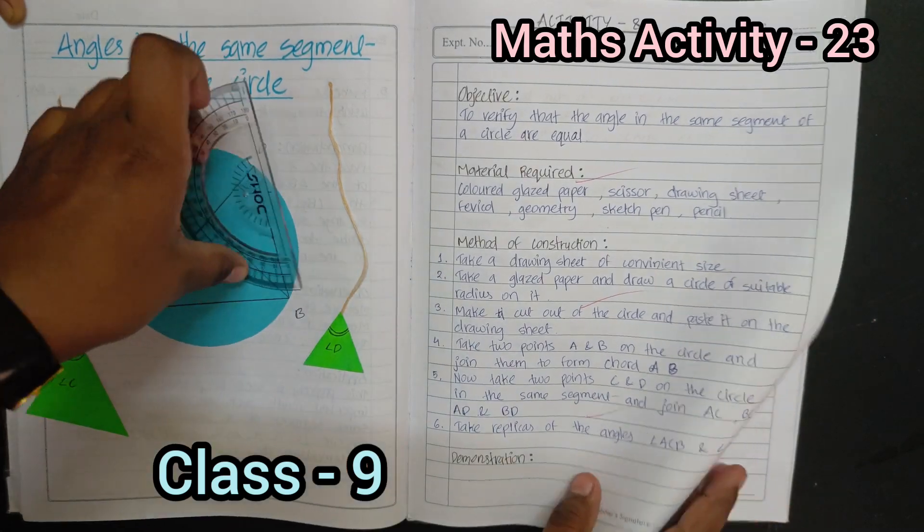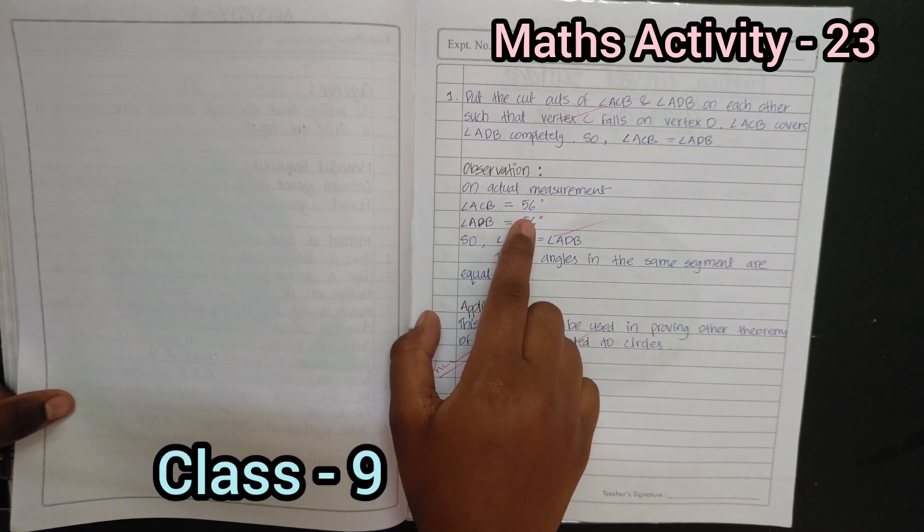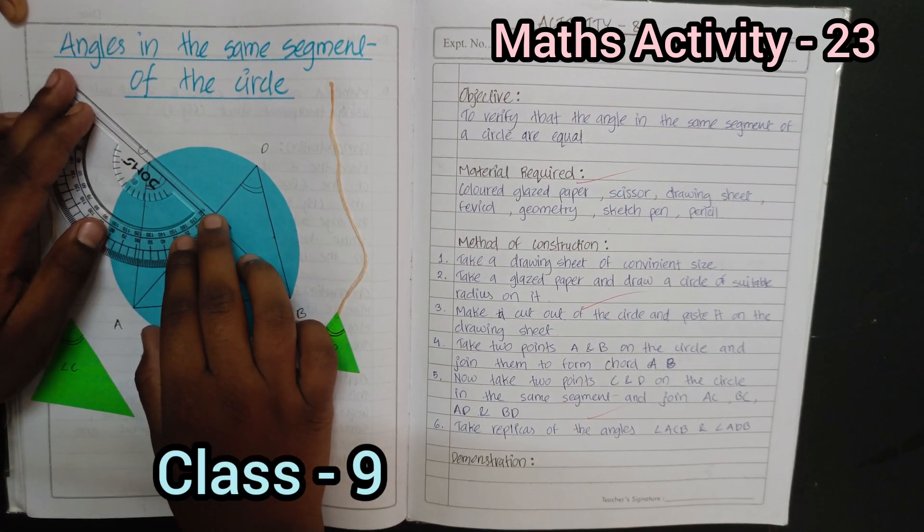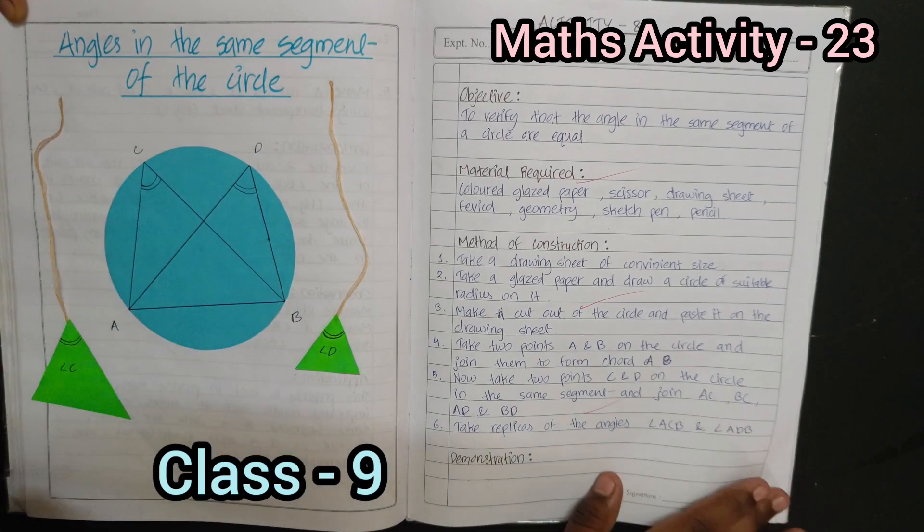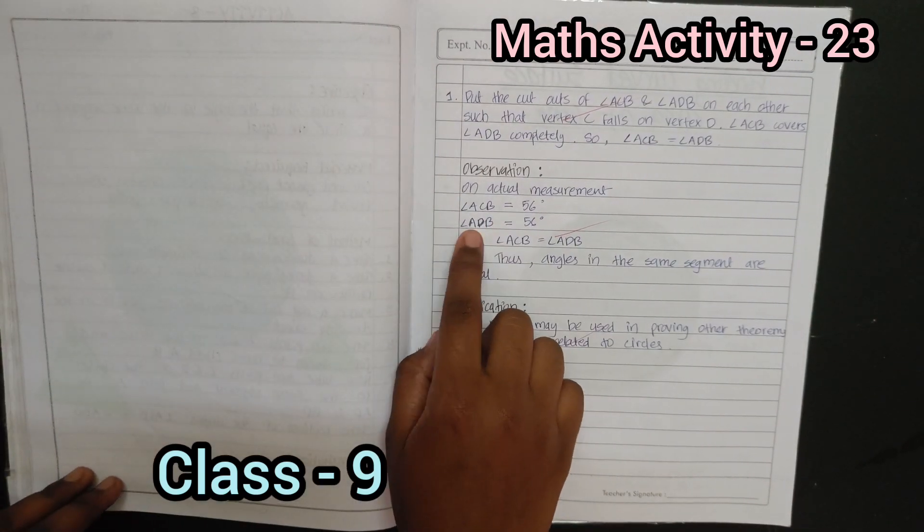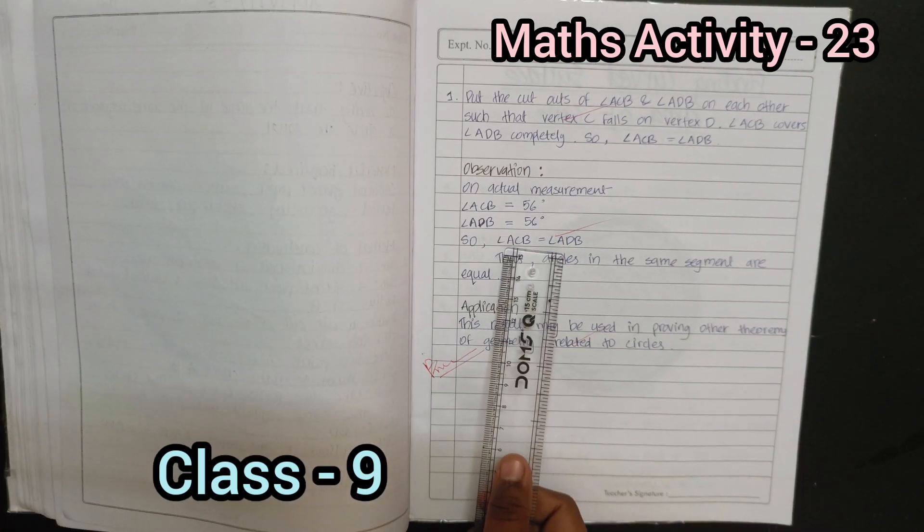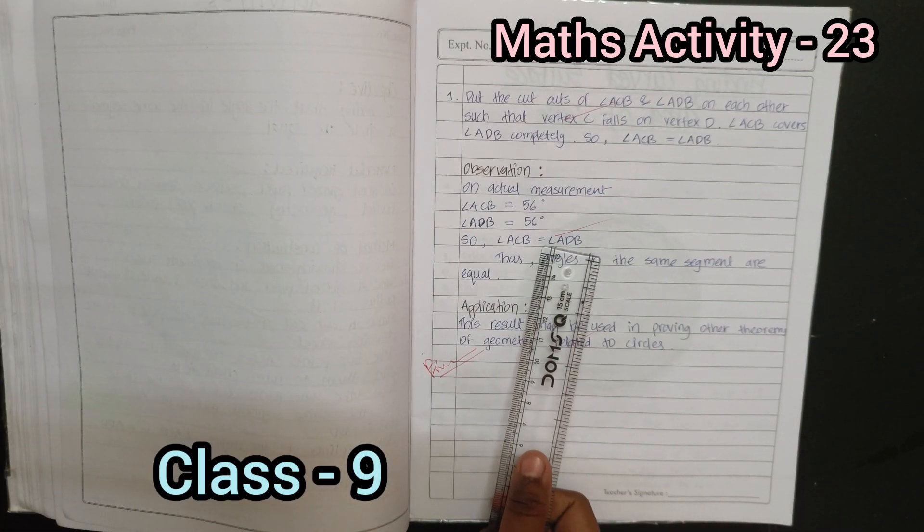56 degrees for angle ACB and same as ACB, angle ADB is also 56 degrees. Angle ACB is equal to angle ADB. Angles in the same segment are equal.